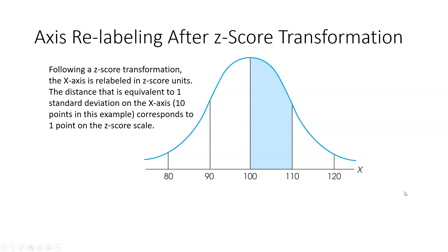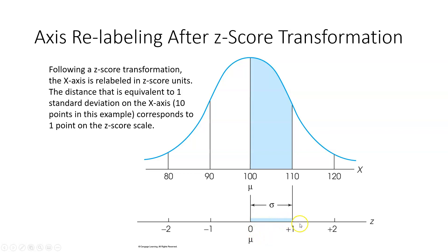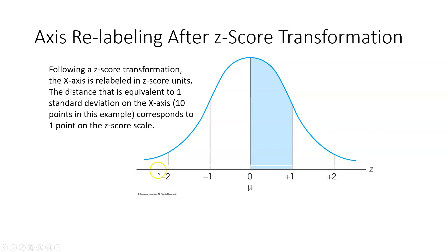Following a z-score transformation, the x-axis is just relabeled in z-score units. The distance equivalent to one standard deviation — in this example, 10 points — corresponds to one point on the z-score scale. We replace the original x-axis with new units where the mean is 0 and the standard deviation is 1. Each original score stays in its place and the shape of the distribution is retained. Nothing changes except the label of each score and the x-axis.